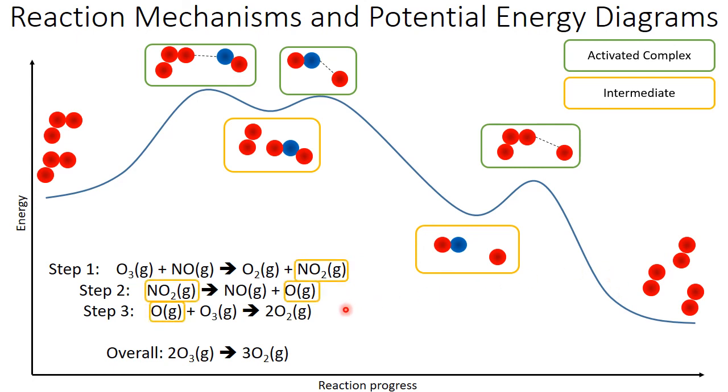We can map these things onto our mechanism as well. I've put the intermediate yellow boxes around our intermediates, and you can see that each one is produced, then consumed. And we can also label our catalyst. Our catalyst is consumed, then produced.